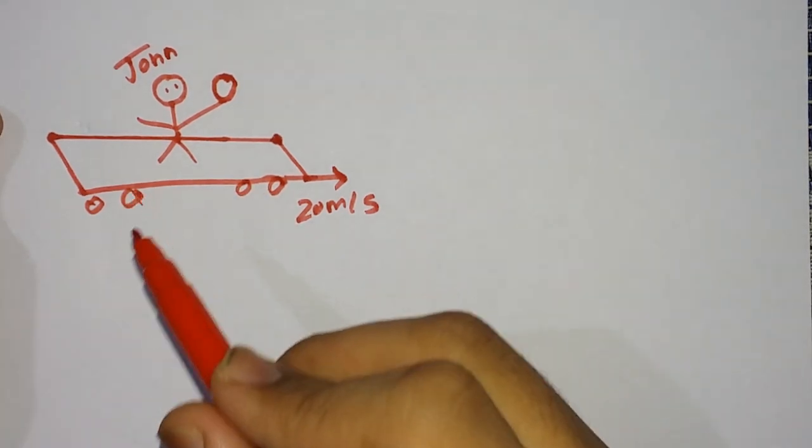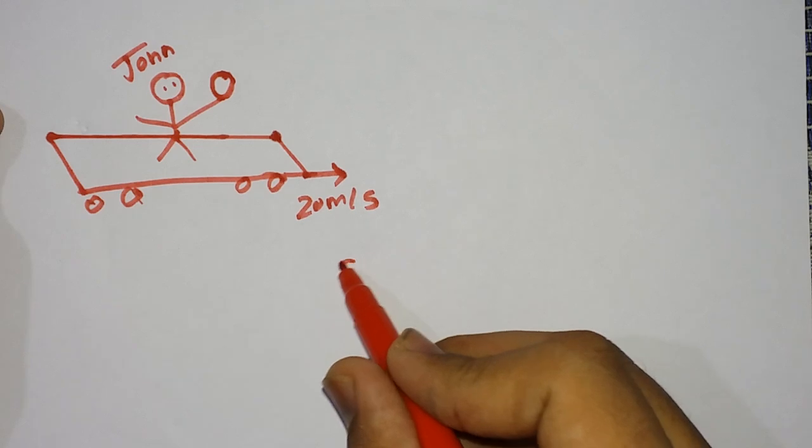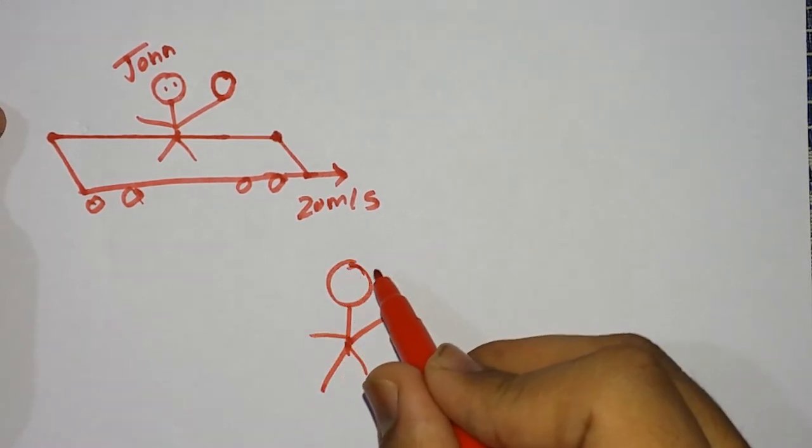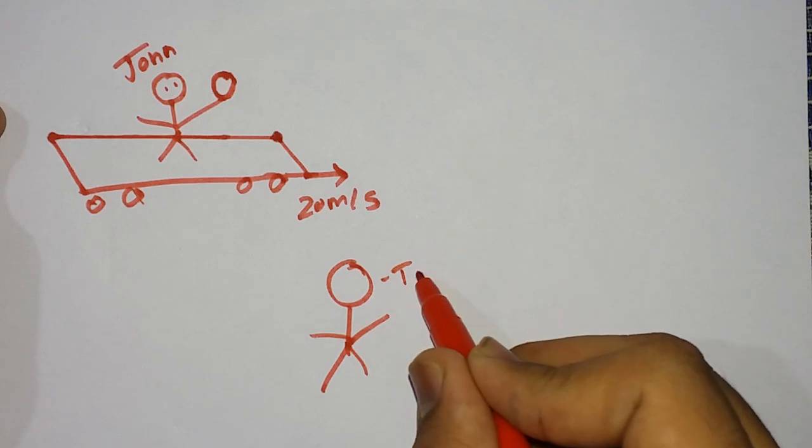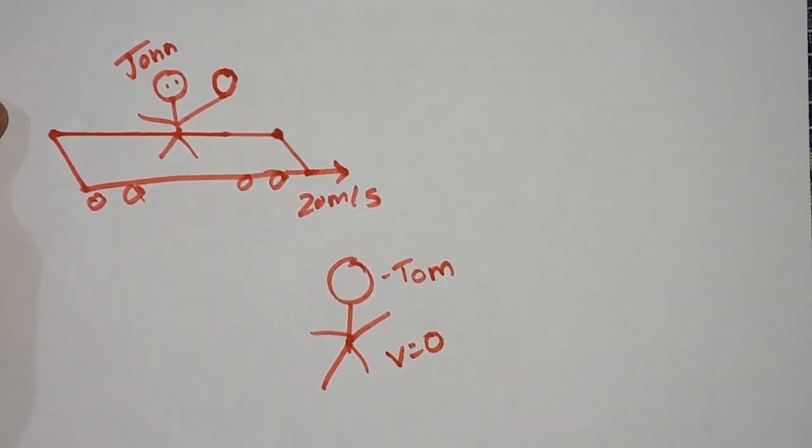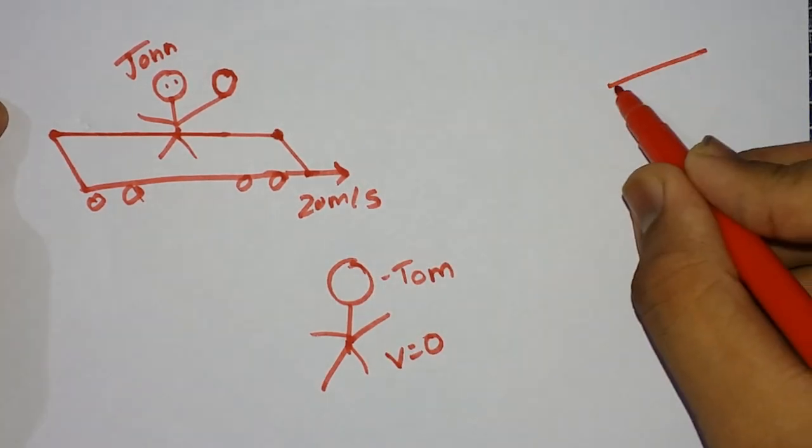Actually it is in motion, but John is in his own frame of reference; he's at rest. Suppose there is another person, Tom. Tom is at rest with no velocity. Now the cart is moving forward and reaches some point here.